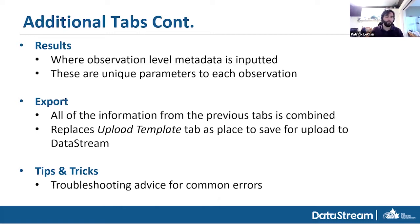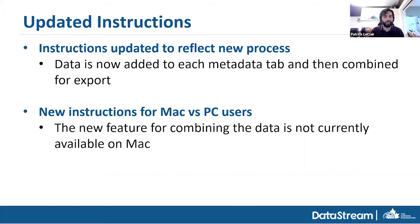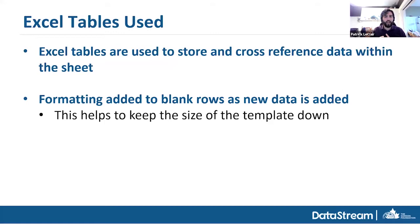We also added a tips and tricks tab for troubleshooting advice on common errors. The instructions were updated to reflect the new process, and we've added separate instructions for Mac and PC users. Unfortunately, the feature we use to combine the four tabs into one is only available on PCs — it's currently in beta for Mac but has been released, so Mac users will have to copy and paste for now. We also use Excel tables now — as you add data, the tables grow and cross-reference to bring everything together, which keeps the template size down and makes it load faster.